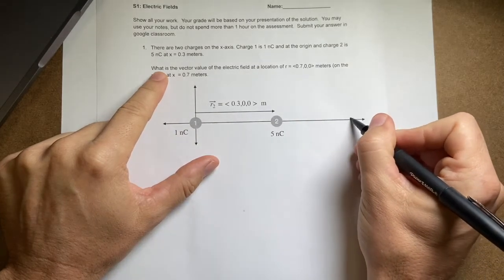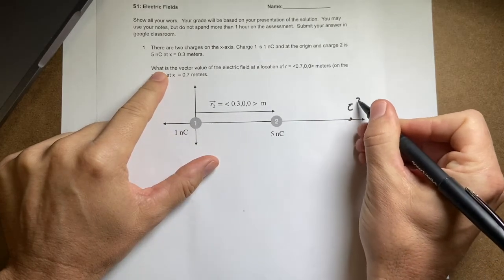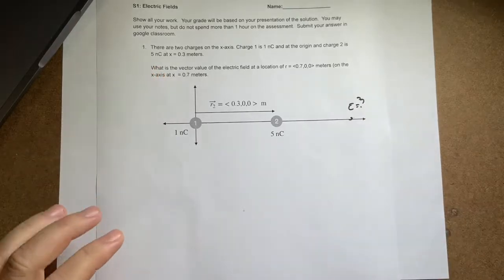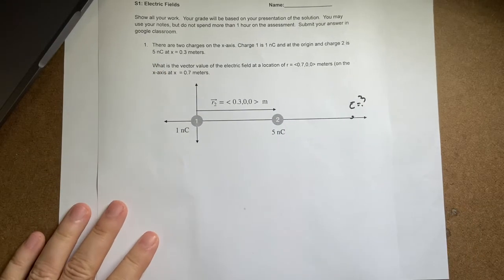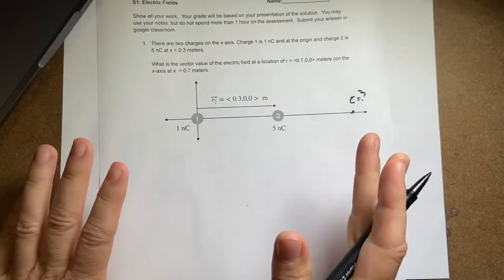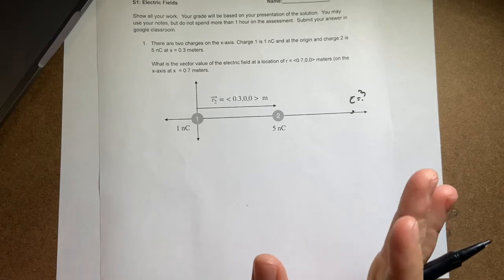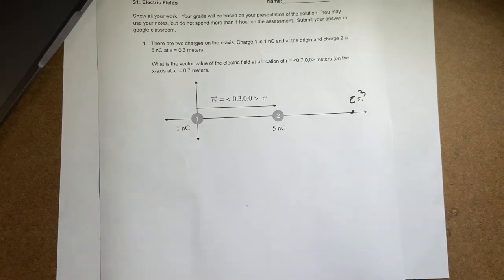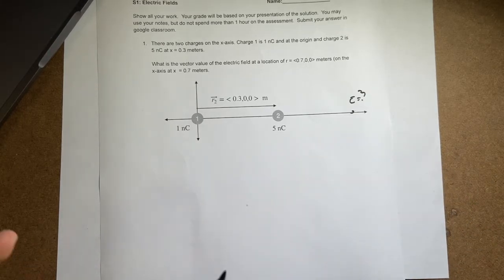So I'm way over here. E equals right there. So I want to find the electric field there. Let's do this the formal way. This problem, actually, you could do two ways. Everything is in one dimension, so you don't have to write this out as a vector. You can just turn it into a vector at the end. And I'll do it both ways.